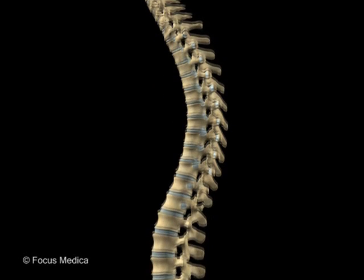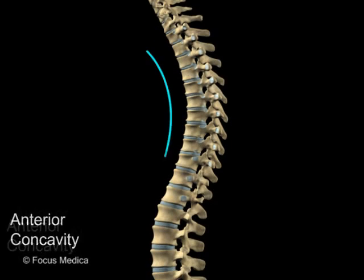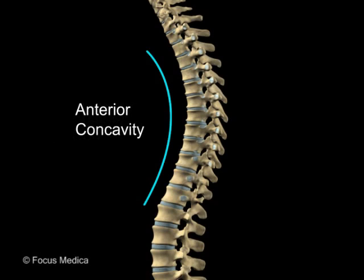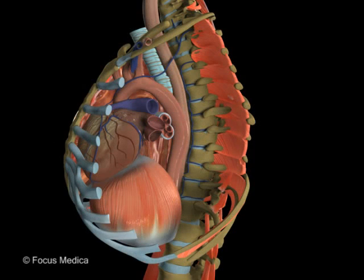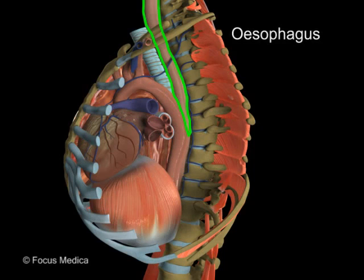The thoracic segment has a gentle anterior concavity and is closely related to the esophagus and descending thoracic aorta.